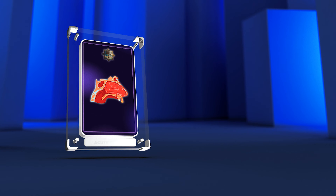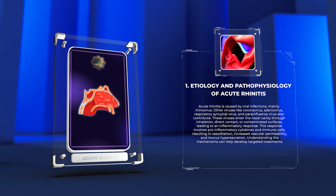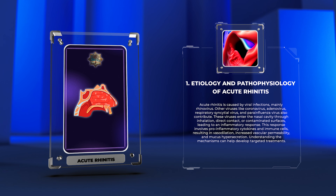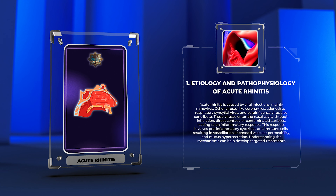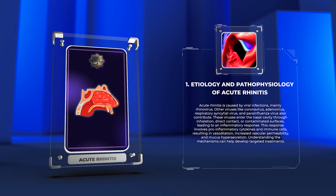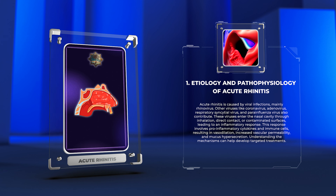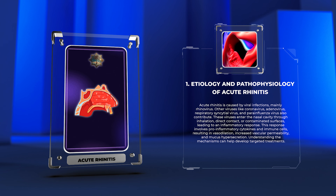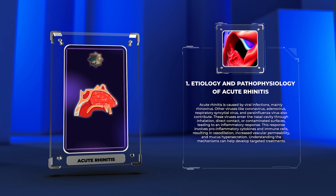Acute rhinitis is caused by viral infections, mainly rhinovirus. Other viruses like coronavirus, adenovirus, respiratory syncytial virus, and parainfluenza virus also contribute. These viruses enter the nasal cavity through inhalation, direct contact, or contaminated surfaces, leading to an inflammatory response. This response involves pro-inflammatory cytokines and immune cells, resulting in vasodilation, increased vascular permeability, and mucus hypersecretion. Understanding these mechanisms can help develop targeted treatments.